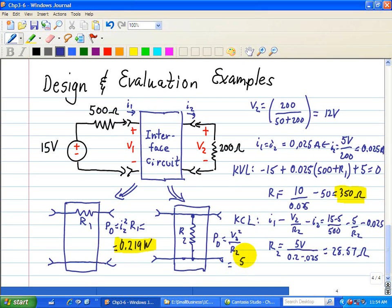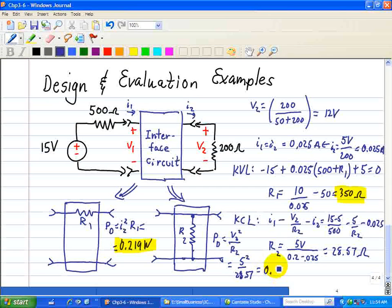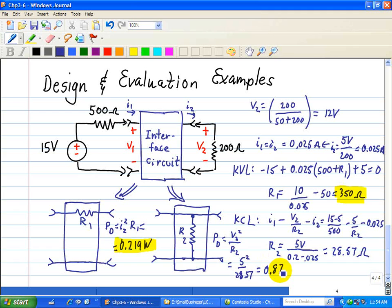so that's 5 squared, and R2 we just calculated to be 28.57. So 5 squared over 28.57 yields 0.875 watts, and I'll highlight that as well.